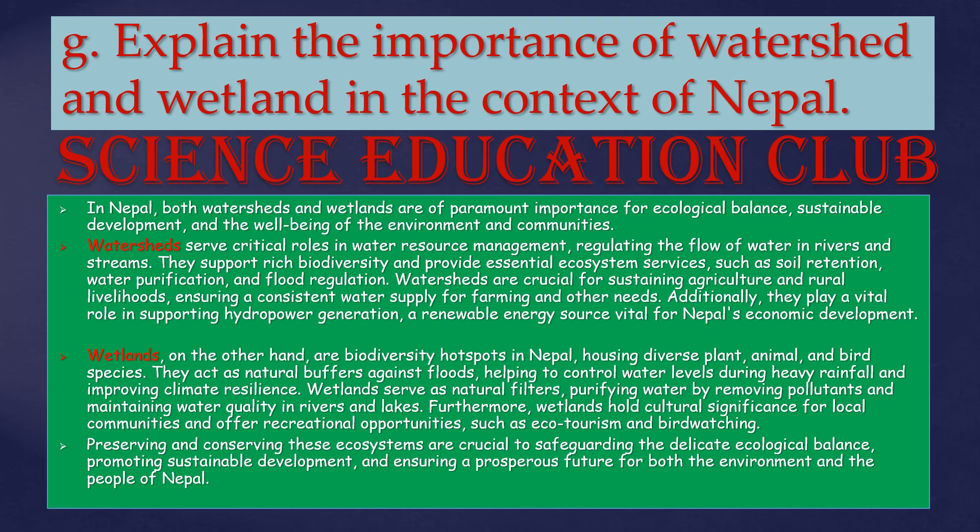Explain the importance and necessity of watersheds and wetlands in the context of Nepal. In Nepal, both watersheds and wetlands are of paramount importance for ecological balance, sustainable development, and the well-being of the environment and communities. Watersheds serve critical roles in water resource management, regulating the flow of water in rivers and streams. They support rich biodiversity and provide essential ecosystem services such as soil retention.